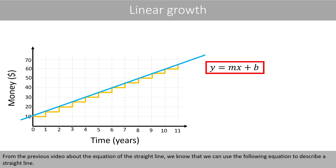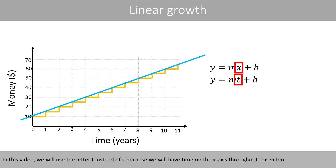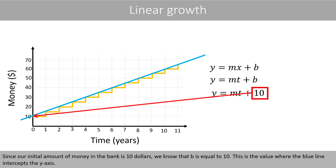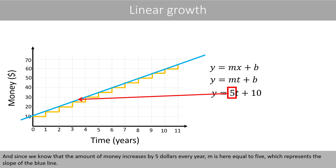From the previous video about the equation of a straight line, we know that we can use the following equation to describe a straight line. In this video, we'll use the letter t instead of x, because we will have time on the x-axis throughout this video. Since our initial amount of money in the bank is $10, we know that b is equal to 10. This is the value where the blue line intercepts the y-axis, and since we know that the amount of money increases by $5 every year, m is here equal to 5, which represents the slope of the blue line.